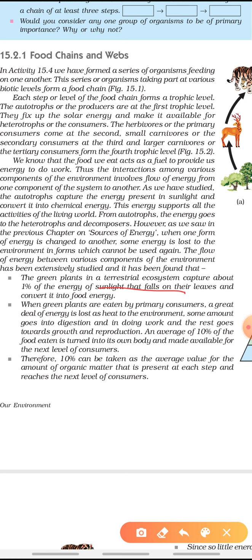When these green plants are eaten by primary consumers, a large amount of energy is lost to the environment. Some energy goes into digestion, some we use for our work, some is lost as heat, and some is used for growth and reproduction. It's said that only 10% of the total energy received will be transferred ahead.